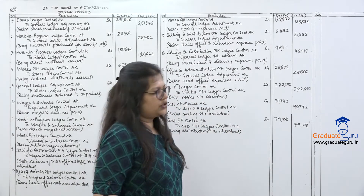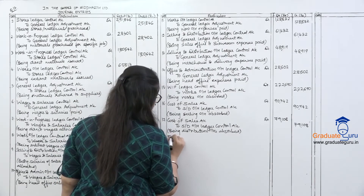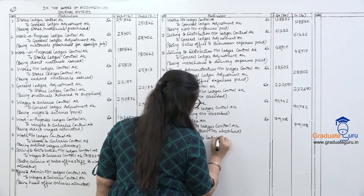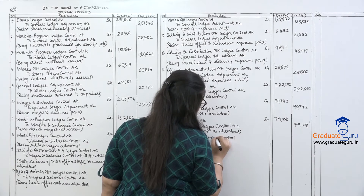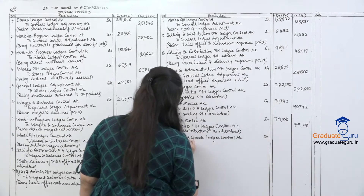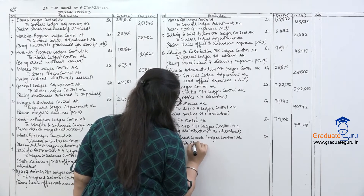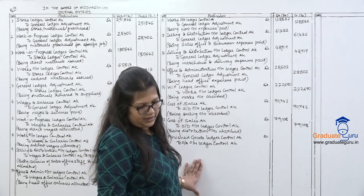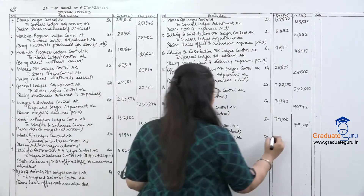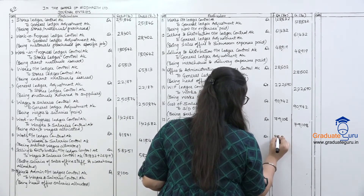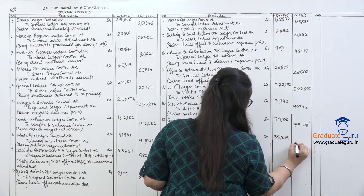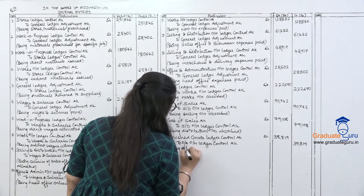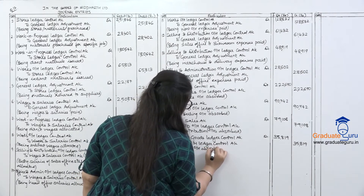Office overheads are absorbed into finished goods: Finished Goods Ledger Control Account debit, to Office and Administration Overhead Ledger Control Account. Amount: 35,819. Narration: being office overheads absorbed. This completes all the absorption entries.